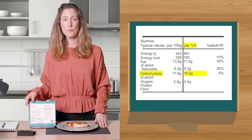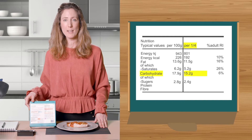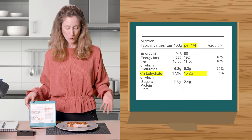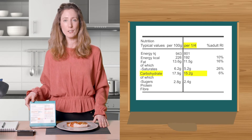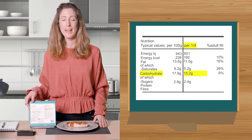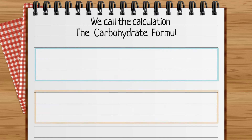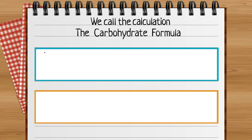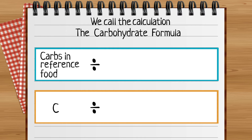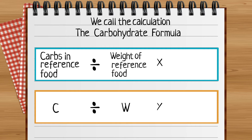So for me to know the carbohydrate in my serving I need to weigh my quiche and calculate the carbohydrate. Here's the calculation: C stands for carbohydrate in reference food, W stands for weight of the reference food, and S stands for the weight of my own serving.